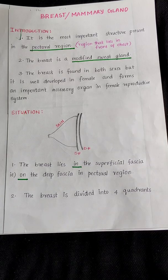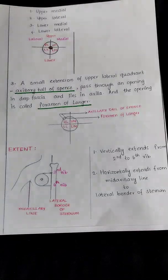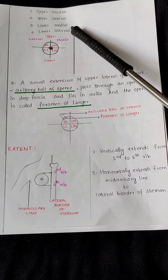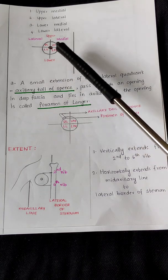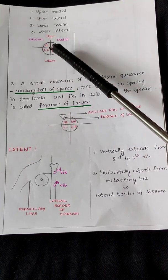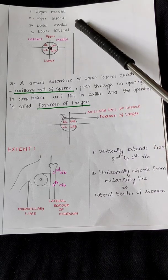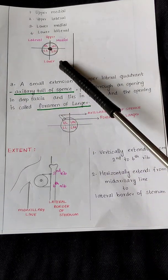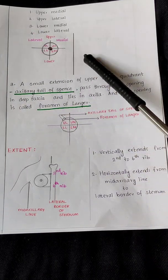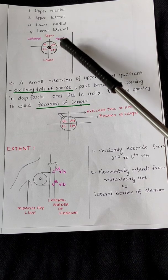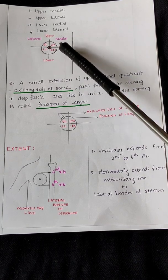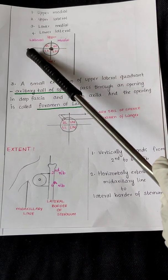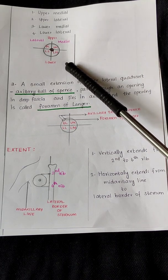The breast is divided into four quadrants: upper medial, upper lateral, lower medial, and lower lateral. Considering the breast with the nipple at center, the areola surrounding it, and identifying upper, lower, medial, and lateral sides — these four quadrants are upper medial, lower medial, upper lateral, and lower lateral.